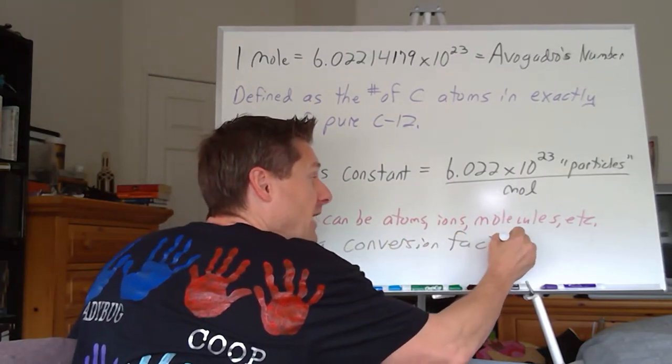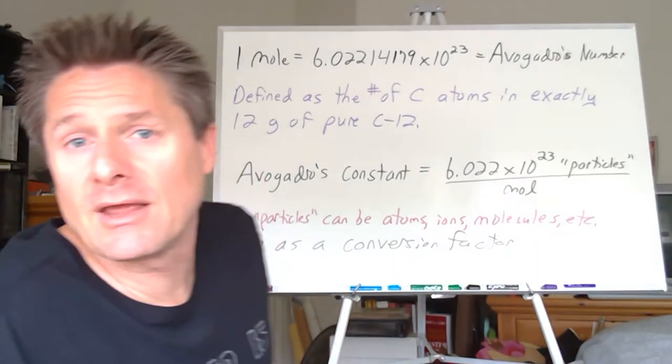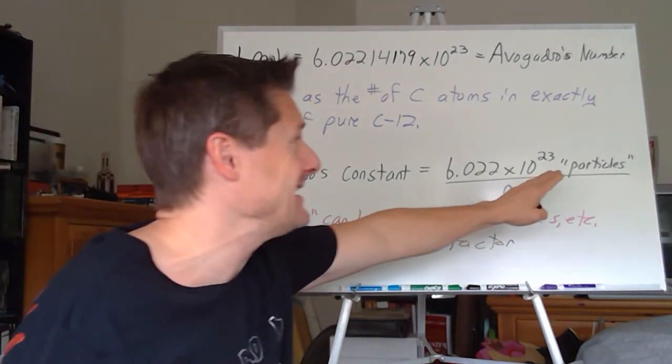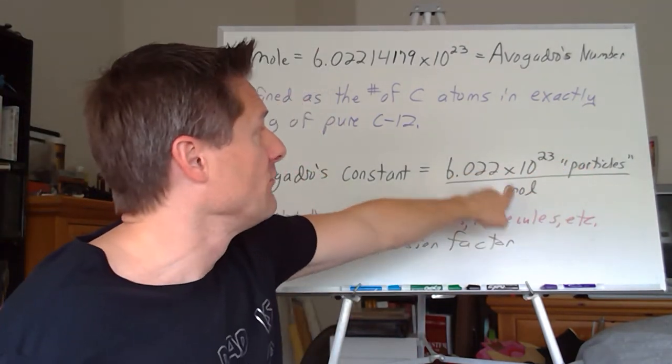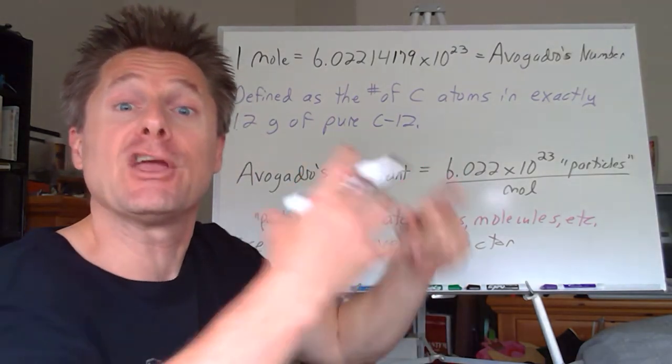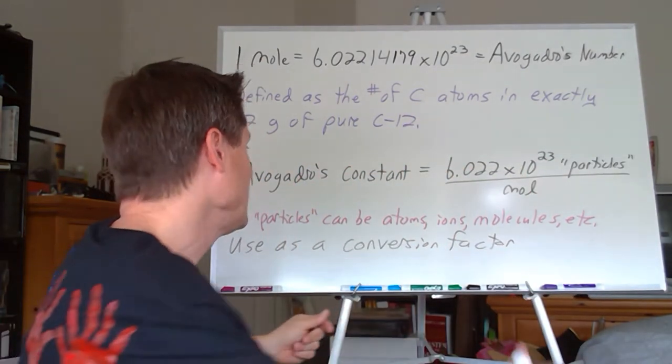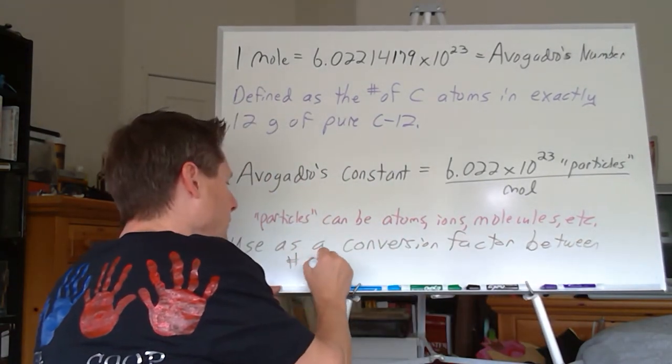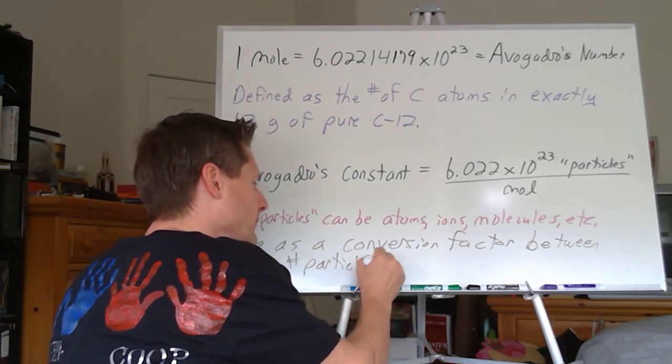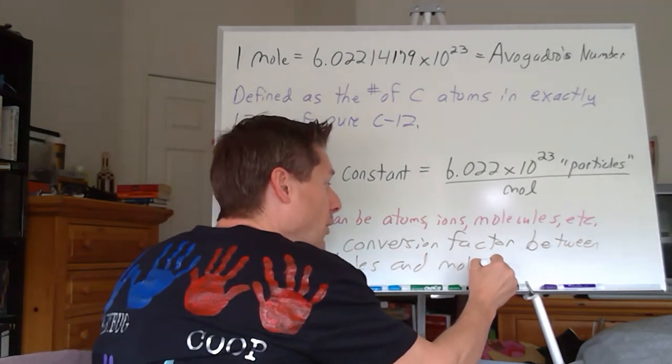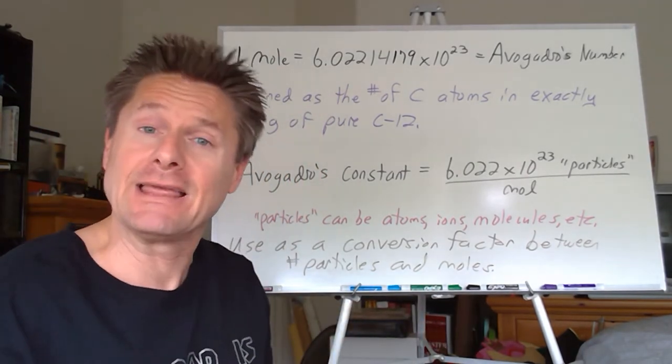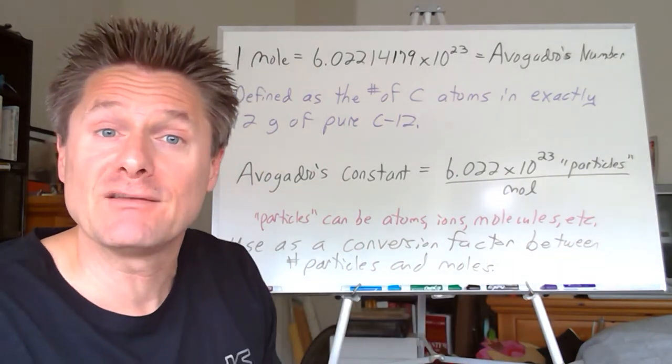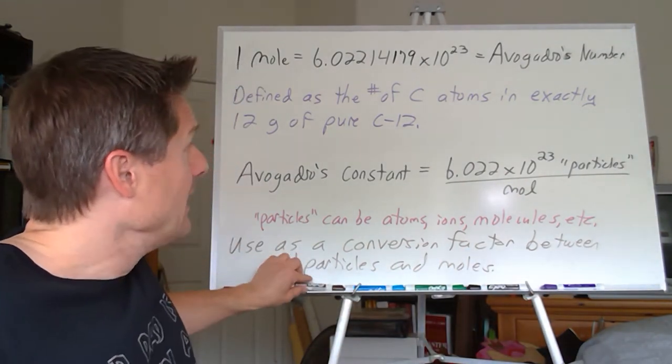So what we're going to do is we're going to use this as a conversion factor. Conversion factors, you know, the 1,000 grams per kilogram, 2.54 centimeters per inch, it just relates two different things together. So we can take an inconceivably huge number of particles, convert that to moles, that's our hub, and then we can go to grams or something from there. As a conversion factor between number of particles and moles. If you're given a number of moles, you could actually calculate how many particles are in that. If you're given a number of particles, you can convert that to moles. Fairly simple. We'll do some examples.